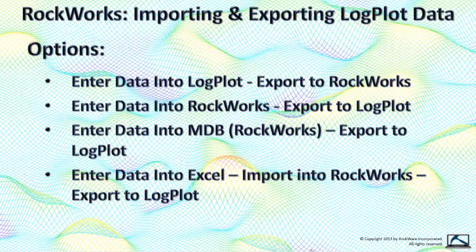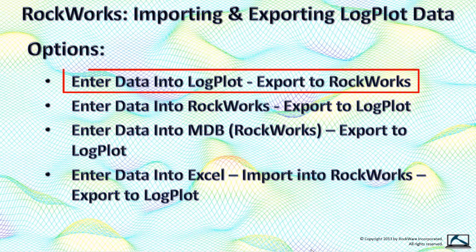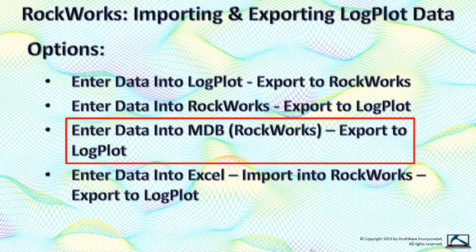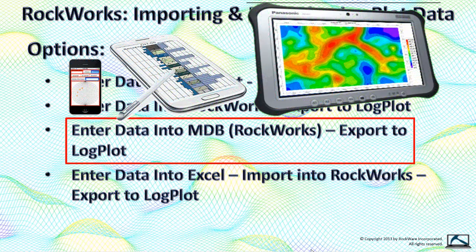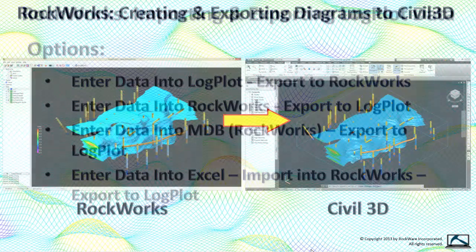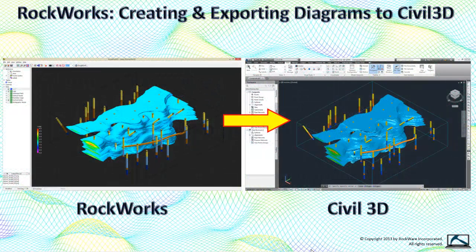Transferring data between Logplot and Rockworks can be done in several ways: you could enter borehole data into Logplot and transfer it into a Rockworks database, export data from Rockworks into Logplot, or enter the data directly into the MDB or SQL files used by Rockworks — an important consideration if you're planning smartphone, phablet, or tablet applications for in-field data entry. You could also enter the data into Excel and import it into Rockworks. Exporting Rockworks diagrams into Civil 3D is fairly straightforward: select File > Export > DXF from the 2D or 3D plotting utilities, and the program will automatically launch Civil 3D and load the DXF.